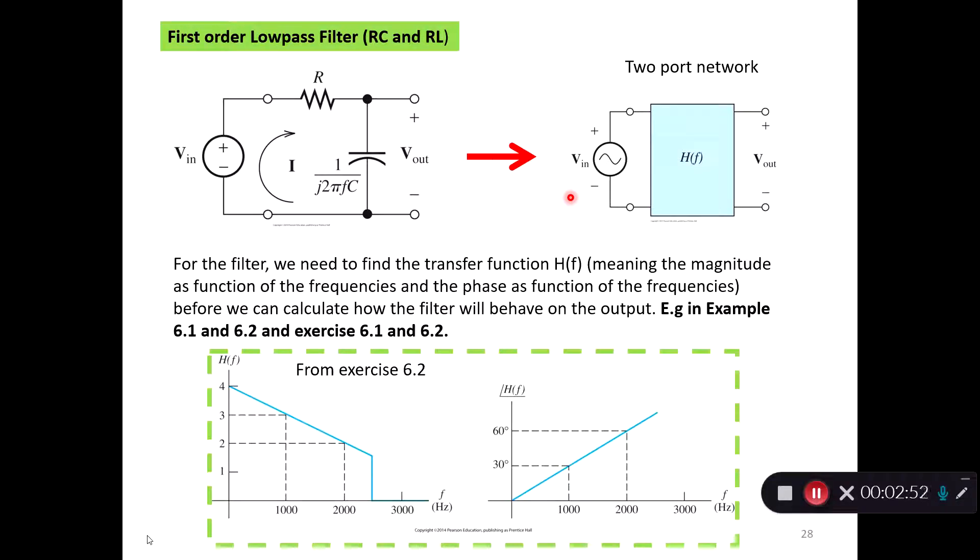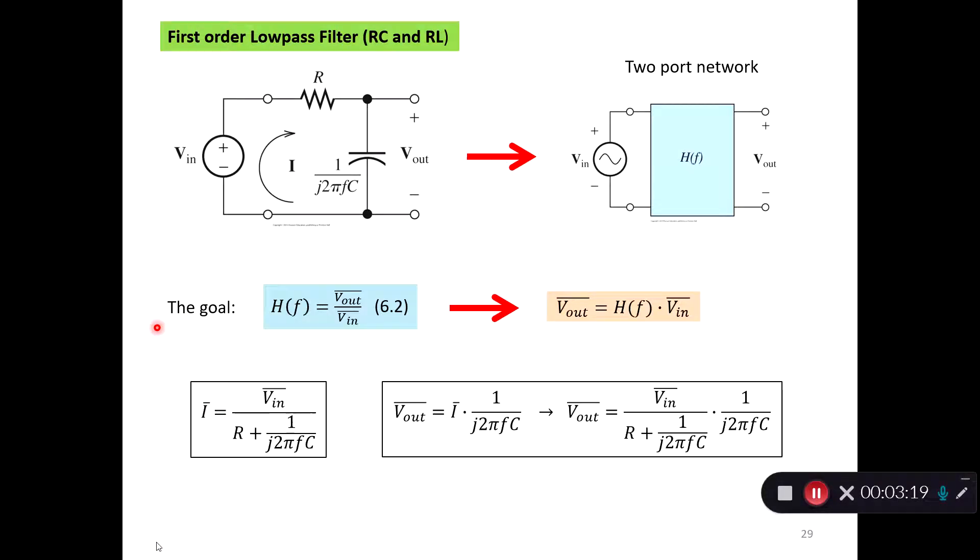The second is that we need to find the transfer function of this filter in order to do further analysis. The transfer function means we need to find an expression for the magnitude and an expression for the phase. The goal is to get the transfer function, the phasor output over phasor input, so that we can predict what the output will be, because we can take the phasor input times the transfer function.